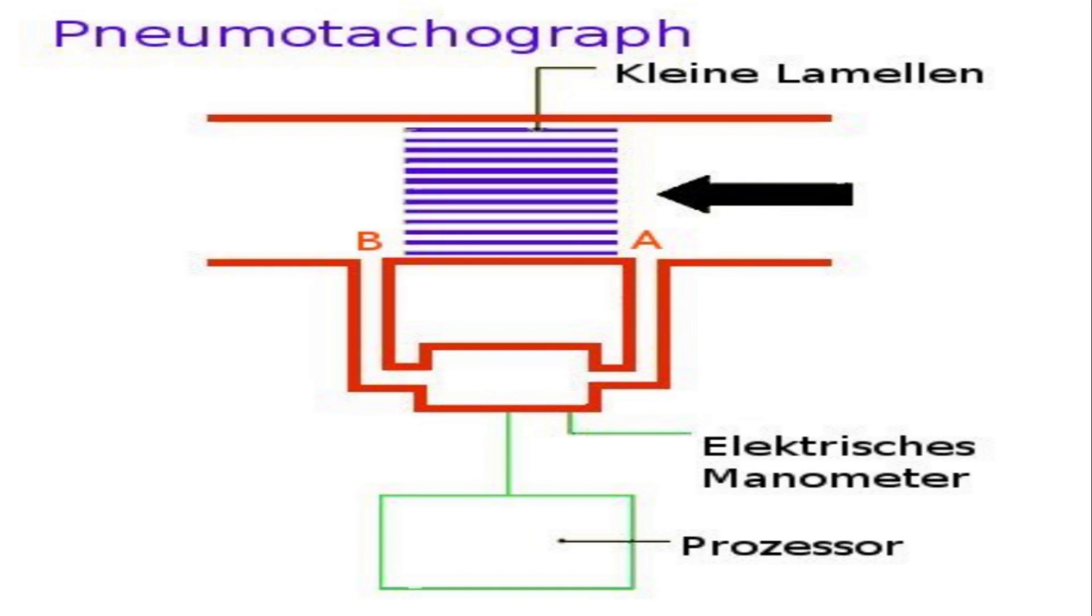To measure this accurately, we use a device called a differential pressure flow meter. It's a bit like a tube with lots of little veins inside.